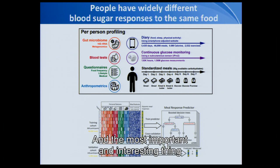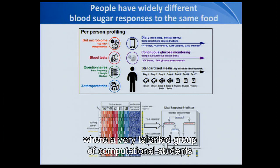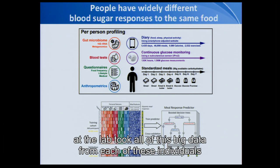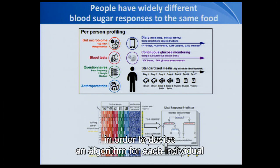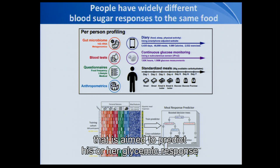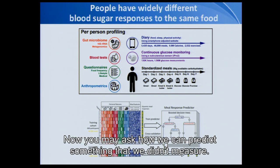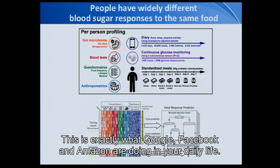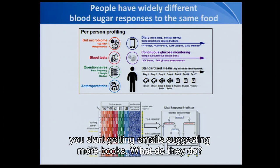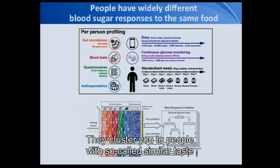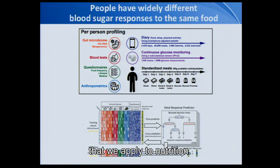The most important thing happened after the end of the follow-up period, where a very talented group of computational students in the lab took all of this big data from each individual and used advanced machine learning techniques to devise an algorithm for each individual aimed to predict his or her glycemic response to any given food — including foods they hadn't even consumed during the week of follow-up. You may ask how we can predict something we didn't measure. This is exactly what Google, Facebook, and Amazon are doing in your daily lives — when you buy five books from Amazon, they cluster you to people with similar tastes. This same machine learning system is what we apply to nutrition.